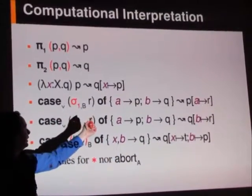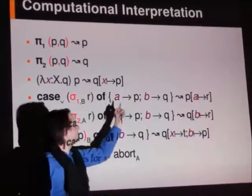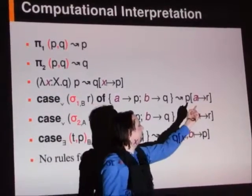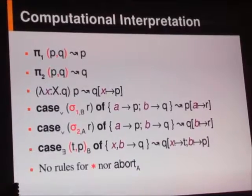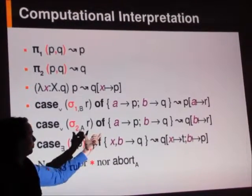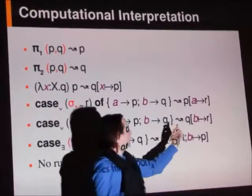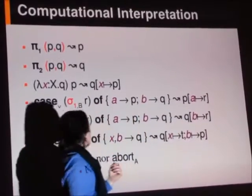what we do is we say we're on the left case, so this is the case we care about, so the answer is p, but again we take all of our variables a and replace them with r. Here we have r as a proof of b, and so we take our q and replace all of these with rs over here.